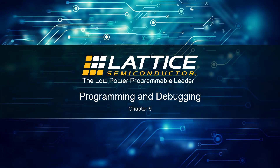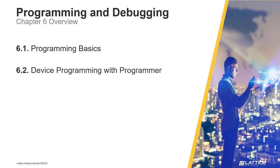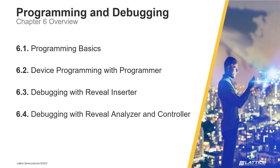Chapter 6: Programming and Debugging. In this section of the Radiant introductory training series, we will discuss the general flow for programming a device and debugging it on physical hardware. Chapter 6 consists of four sections. In section one, Programming Basics, we review the general flow for programming a device using Radiant. In section two, Device Programming with Programmer, we discuss Radiant's programmer tool. In section three, Debugging with Reveal Inserter, we introduce Radiant's Reveal Inserter tool and how it can be used to add debug cores to a design.